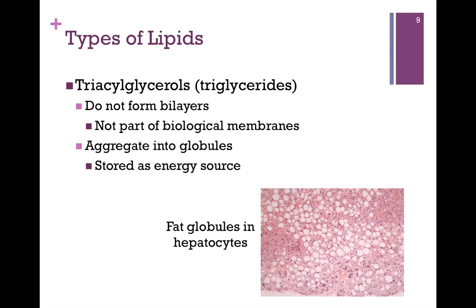Triglycerides don't form bilayers — it has to do with the geometry of their structure — so they're not part of a biological membrane. Their role generally is to be stored as an energy source. They aggregate into globules, illustrated in this electron micrograph of hepatocytes, where the white portions are fat globules. This is not a healthy liver, but it's a good picture of what these fat globules look like. We tend to store fat long-term as triglycerides — that's how it's stored in our adipocytes — and we'll look at more of the metabolism in Chapter 17.